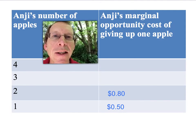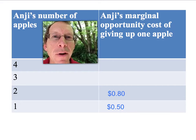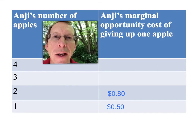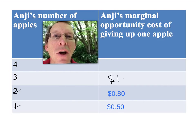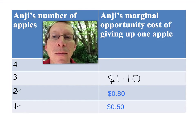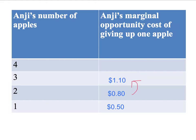Suppose that Anji's given up two apples — she's down to two apples, and we ask the question again. Hey Anji, you've got two apples left — what's the minimum amount we would have to compensate you to get you to give up a third apple? Given you've already given up two, what's the minimum amount you'd be willing to accept to give up a third apple? Let's suppose her answer is $1.10. That is her marginal opportunity cost of giving up a third apple when she's already given up two apples. Notice that Anji's marginal opportunity cost is going up when she has fewer apples — $1.10 is higher than $0.80.